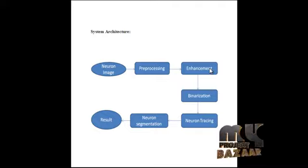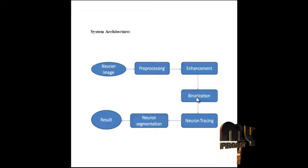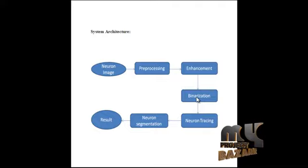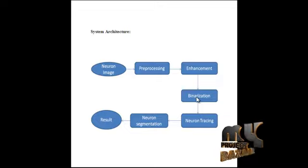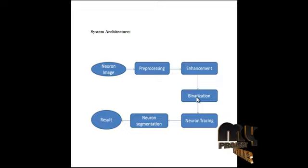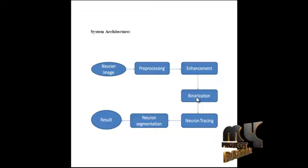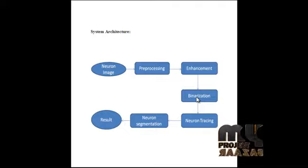The enhanced image is passed to the binarization stage. In binarization, we convert the neuron image into a binary image. A binary image is a black and white image containing only zeros and ones. For binarization, we use a Gaussian-based scheme that determines whether each pixel belongs to the neuron structure. If it belongs to the neuron, the pixel is marked as 1; otherwise it is marked as 0.